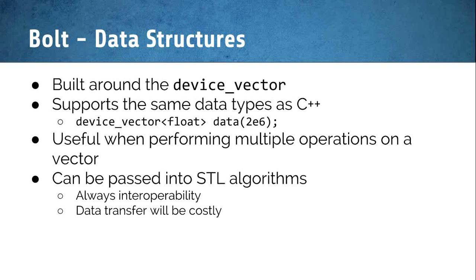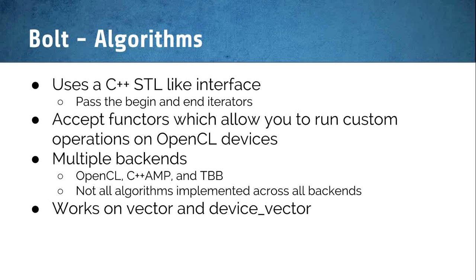You can also use Bolt to pass information to STL algorithms, which allows interoperability. The key thing to note is that because a lot of things are happening on the GPU, you're passing information from GPU to CPU, and that data transfer can be really costly. Bolt uses a C++ STL-like interface with functors for customizing kernels. It has multiple backends such as OpenCL, C++ AMP, and Intel's TBB. Not every algorithm is implemented across all backends, so if you need a specific algorithm, you might have to install a specific backend.